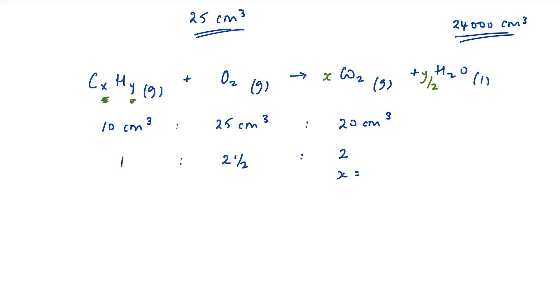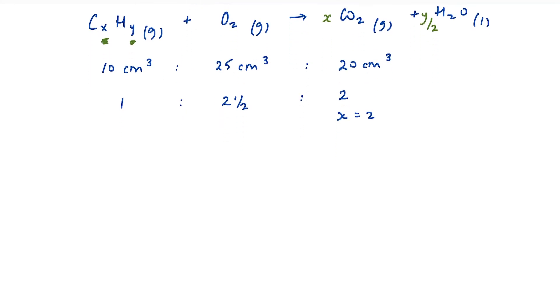Straight away, I now know that X equals 2. Let's carry on. So I have C2Hy plus 2.5 O2 going to form 2CO2 plus Y divided by 2 H2O. Two and a half O2s gives me five oxygen atoms. I know that four of them have ended up in the CO2, which means that I've got one water molecule. So if I've got one water molecule, then I must have two hydrogens. Y equals 2. So my final formula must be C2H2.